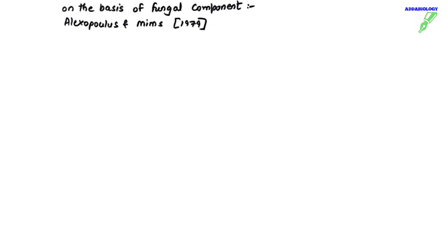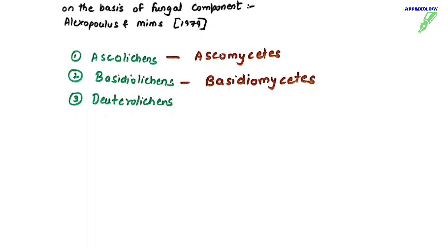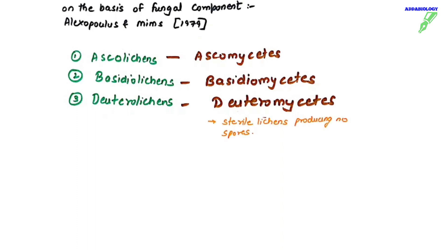Alexopolis and Mims in 1979 described the fungal components in a different way, based on the fungal partner. First is ascolichen — fungal partner is Ascomycetes. Second is basidiolichen — fungal partner is Basidiomycetes. Third is deuterolichen — fungal partner is Deuteromycetes. Deuterolichen are called sterile lichens because in Deuteromycetes we never know the reproduction method, so they produce no spores.